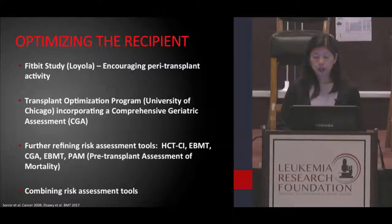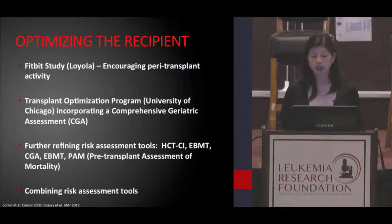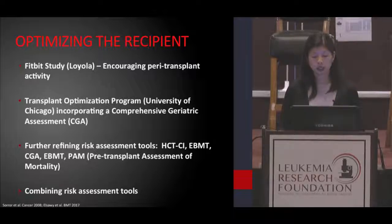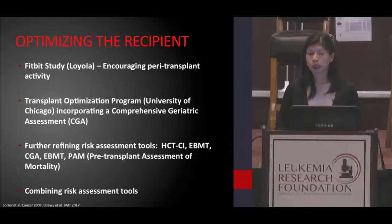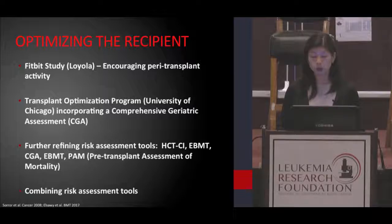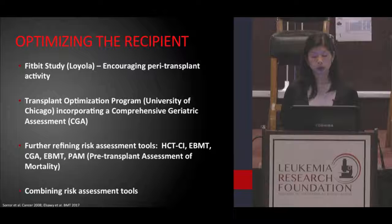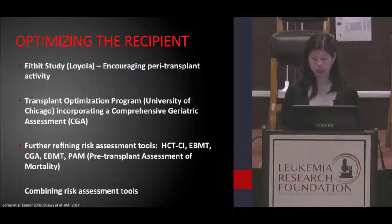Other efforts to improve transplants from the recipient side include refining the risk assessment tools that we currently have. We often use these tools before transplant to help us determine who is appropriate for transplantation. These tools are never perfect, so there are ongoing efforts to improve them and to determine whether combining multiple tools might give us more information and better ability to optimize patient selection.